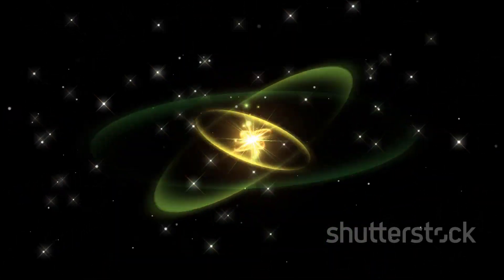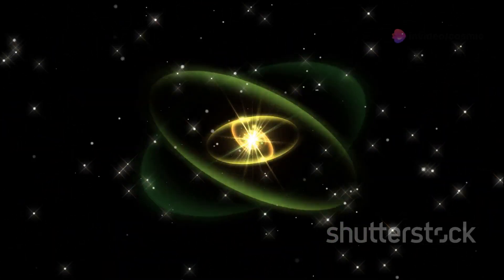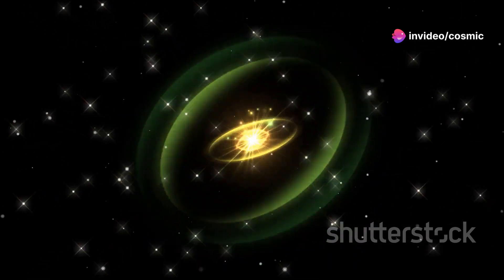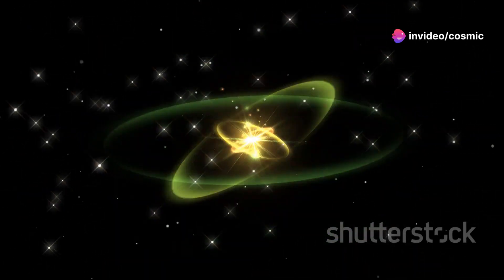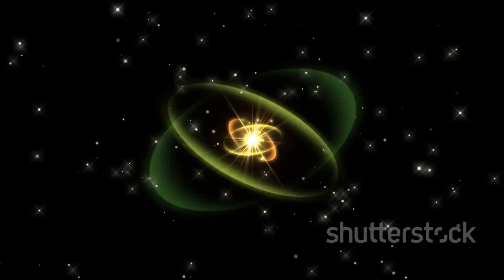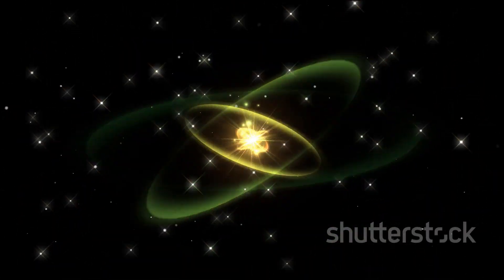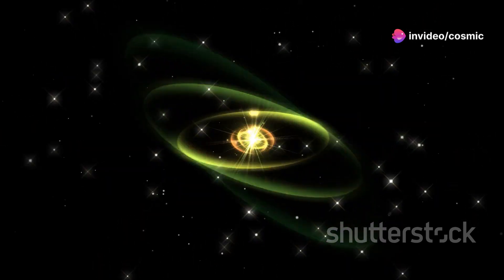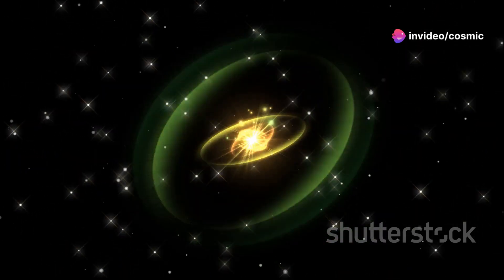Neutron stars are among the densest objects in the universe. To put it into perspective, a single teaspoon of neutron star material would weigh billions of tons. Imagine squeezing Mount Everest into a teaspoon. This extreme density gives pulsars incredible gravitational pull and magnetic fields that are trillions of times stronger than Earth's, making them fascinating objects to study.